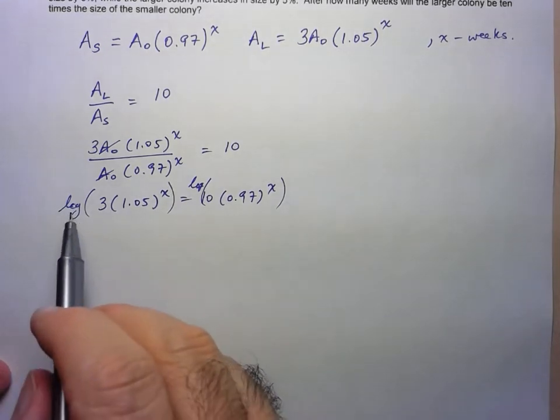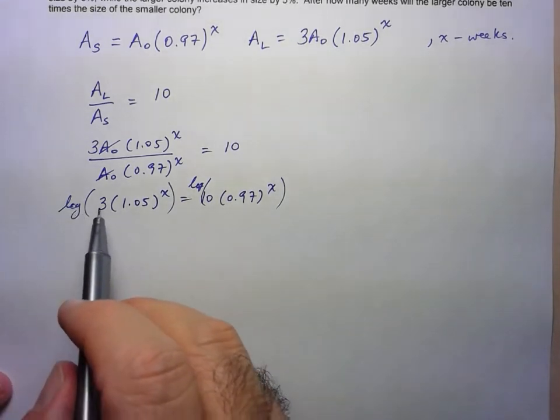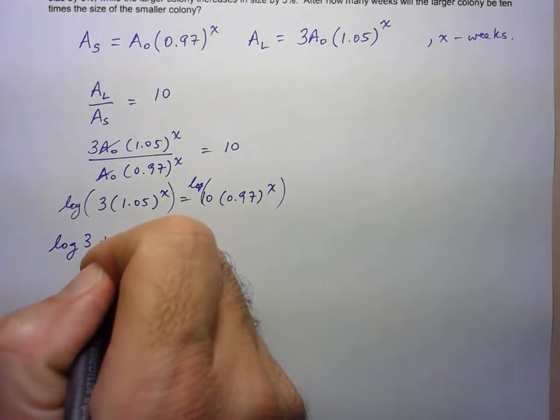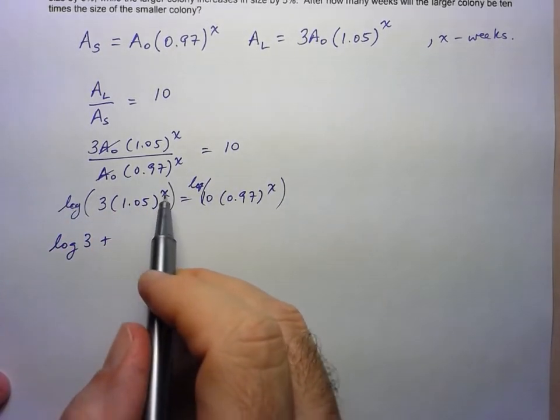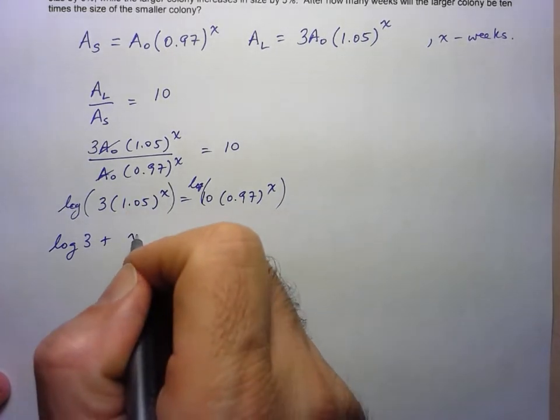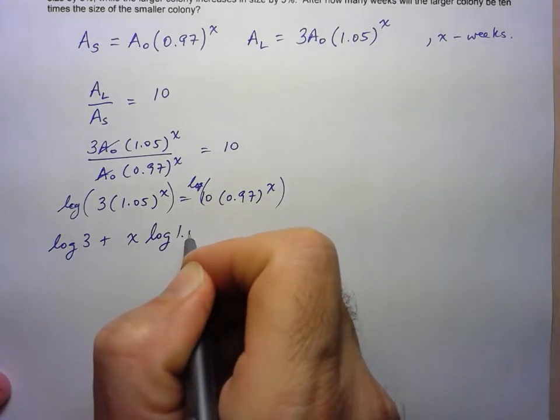So the first thing I'm going to do is I'm going to use the first log law to split this up. So this is going to be log of 3 plus log of 1.05 to the X. But now I can use the ski slope rule. So I'm just going to right away write that as X log of 1.05.